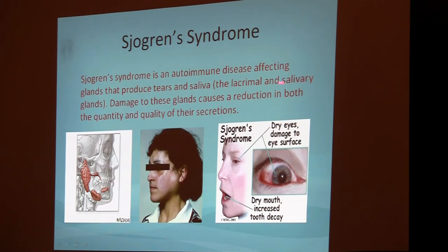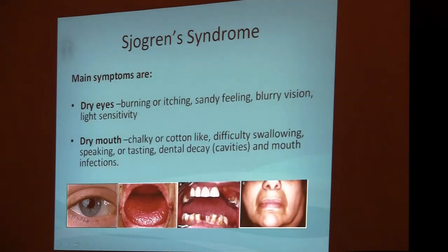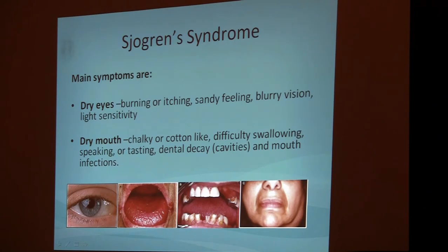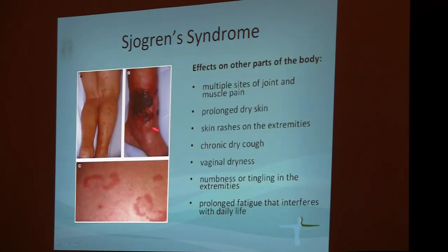The damage to the glands includes reduction in the quality and quantity of secretions. Main symptoms include dry eyes, dry mouth, dry skin, absence of sweat, and in women, frequent yeast infections and vaginal dryness. The disease affects approximately 10% of women after menopause, with a ratio of women to men of 10 to 1. If diagnosed early enough and treated aggressively, it can be completely reversed; late cases can only be treated symptomatically. Sjögren's syndrome can also affect joints and muscles, cause skin cracking due to dryness, chronic cough from bronchial dryness, vaginal dryness, nerve damage causing tingling and numbness in the hands and feet, and prolonged fatigue.